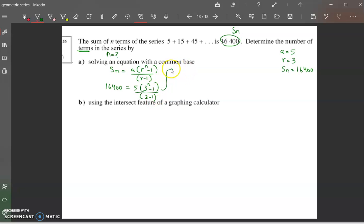3 to the power of n minus 1, all over 3 minus 1. So what does that give me? 16,400 equals 5 multiplied with a bracket divided by 2. So if I want to get these things, these ones which are multiplying and dividing, I want to get rid of them first. So I'm going to multiply both sides by 2. That will get rid of the 2 here.